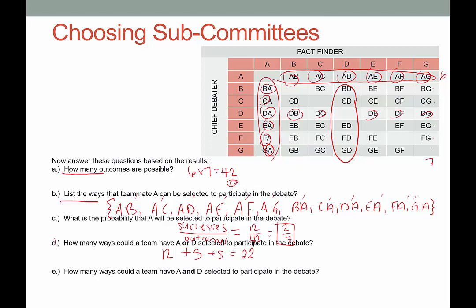The last question here: how many ways could the team have A and D selected to participate in the debate? We have to be really careful with the language — or meant one or the other, but and means they both must be present. A success is seeing both the letters A and D in the combination. I see one here, and the only other place I see it is here. There are only two ways that both A and D could be selected. We have to be very careful when it comes to the language used.